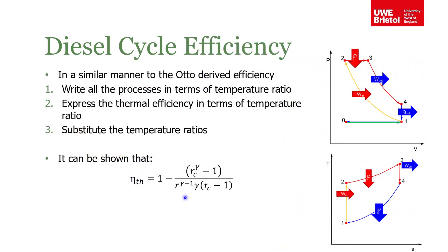As I said, you'll be pleased to know that I'm not going to derive this for you. I did it in exactly the same way as I did it for the Otto cycle. I derived the thermal efficiency, wrote all the processes in terms of temperature ratio, expressed the thermal efficiency in terms of temperature ratio, and substituted one into the other and cancelled down. What you can see is the thermal efficiency for a diesel engine, like the Otto engine, is a function of the compression ratio and the ratio of specific heats gamma. But you can see there's a new term in here which is rc - that's that cutoff ratio I was talking about. It's related to how much fuel is added into the engine, or when this isobaric heat addition stops.